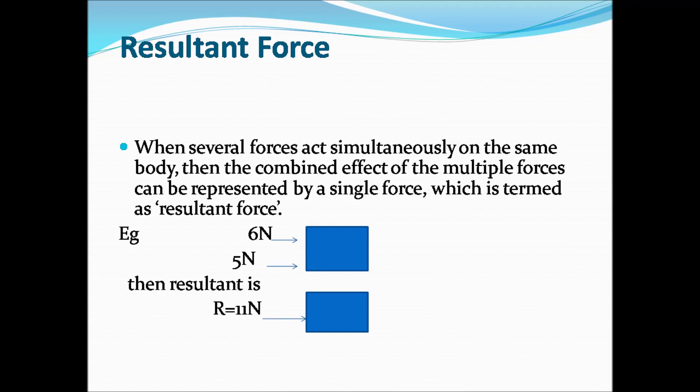Resultant force: when a number of forces act on the same object, the combined effect is represented by a single force called the resultant force. For example, if two forces of 6 N and 5 N act on a block in the same direction, the resultant is R = 11 N, found by algebraically adding the forces.